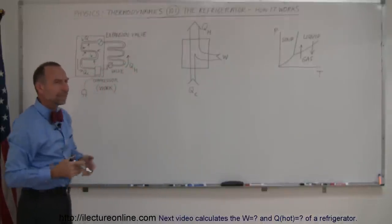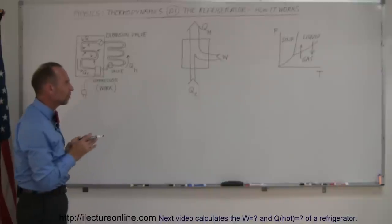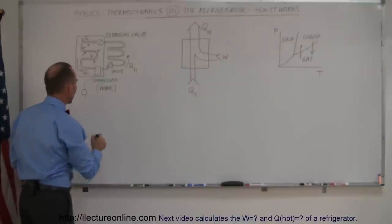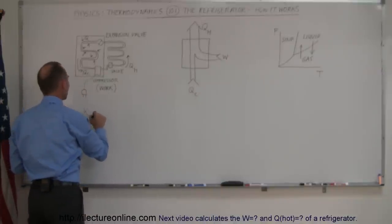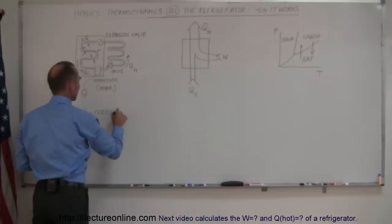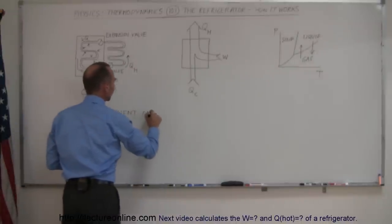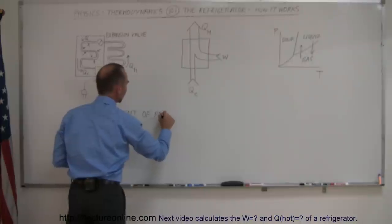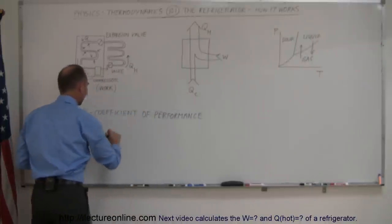The way in which we calculate the efficiency of that is not really like we do for an engine. We actually calculate what we call the coefficient of performance. We use the letter K for that, and we call that the coefficient of performance of the refrigerator or the air conditioner.